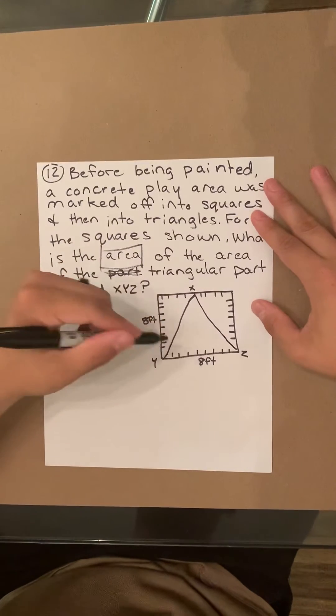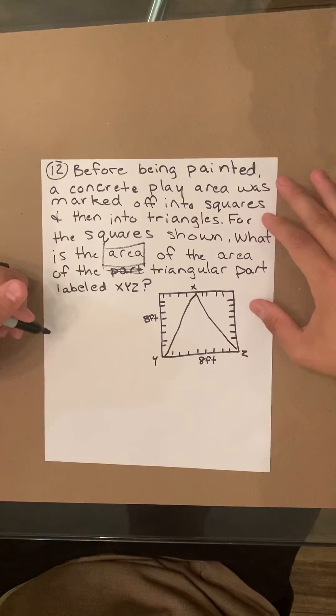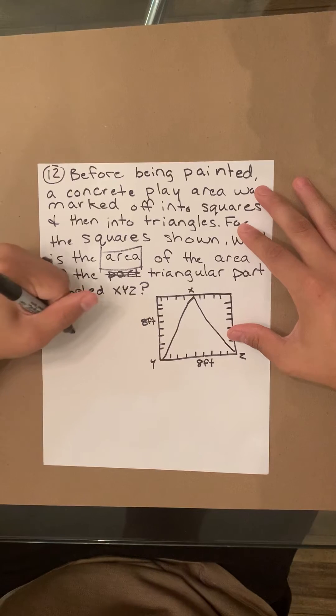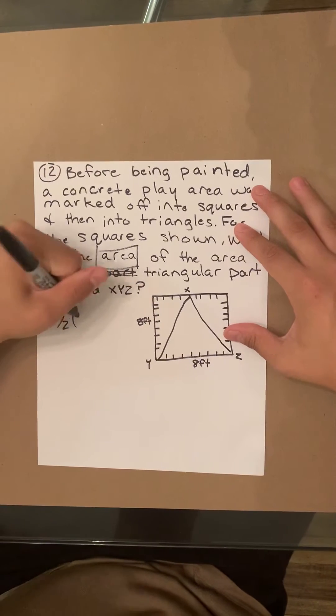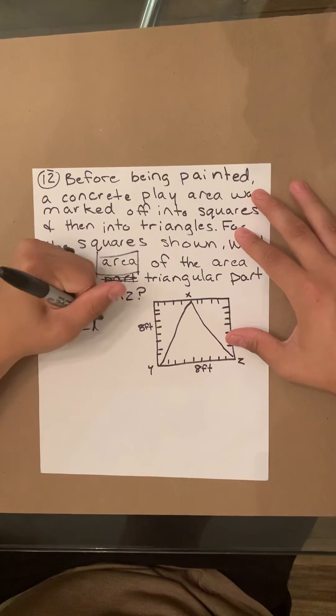So when it involves right triangles, there's a formula you go by. It's half times pretty much the length times the width, essentially.